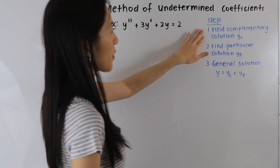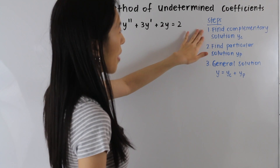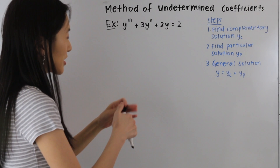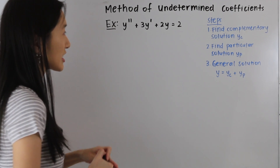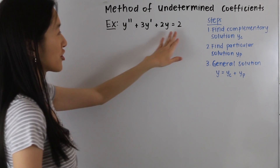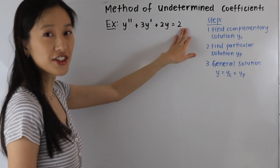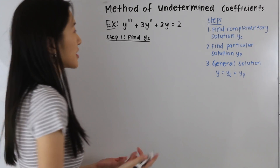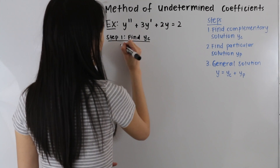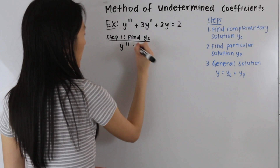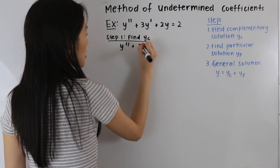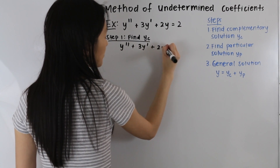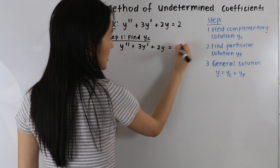Our first step is we want to find our complementary solution. The complementary solution is the solution to the homogeneous version of this differential equation. So our homogeneous differential equation is: y double prime plus 3y prime plus 2y is equal to 0.